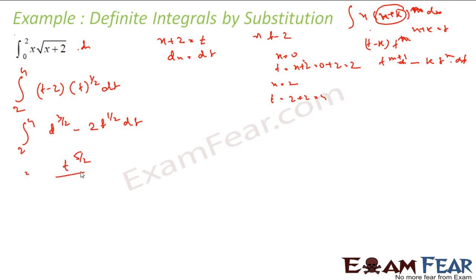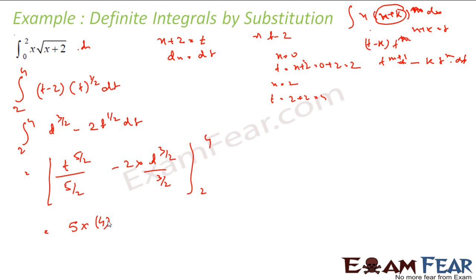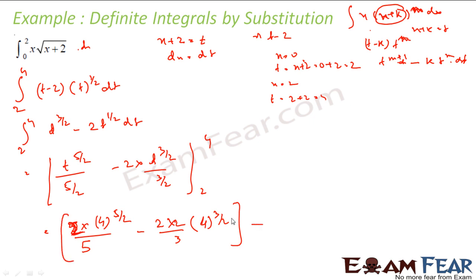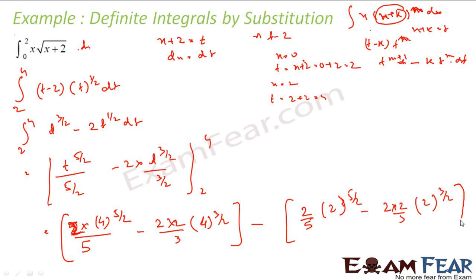This is nothing but t to the power 5/2 divided by 5/2, minus 2 times t to the power 3/2 divided by 3/2, evaluated from 2 to 4. Solving this gives 2/5 times t to the power 5/2 minus 4/3 times t to the power 3/2, from 2 to 4.